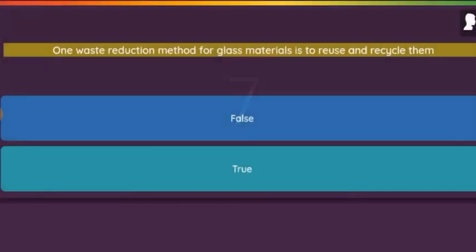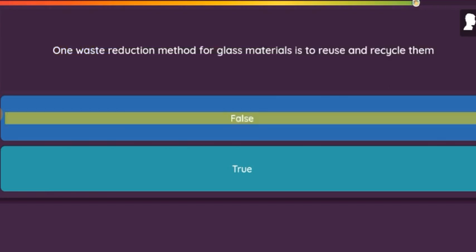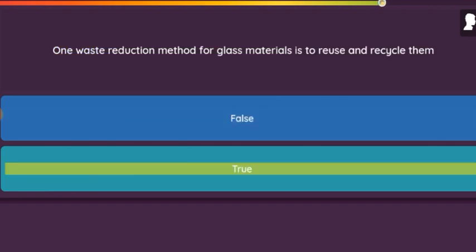Question: Waste reduction method for glass materials is to reuse and recycle them. Option 1: False. Option 2: True.